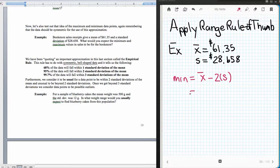So we're going to take the mean and we're going to subtract two times this S value. So substituting this in, this gives us 61.35 and then minus two times 28.658. And that will be our expected minimum value.